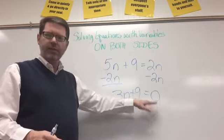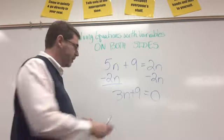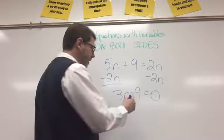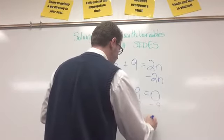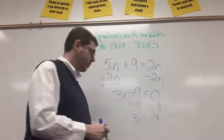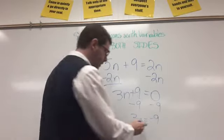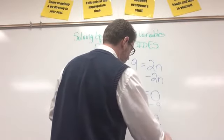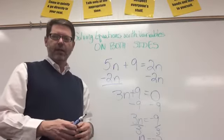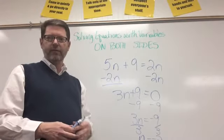Now I have 3n plus 9 equals 0. I'm going to solve the equation like I normally would. The first thing I'm going to do is subtract 9 from both sides. So 3n equals negative 9. And then I divide both sides by 3. So n equals negative 3.